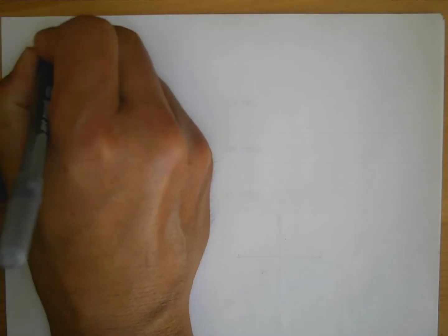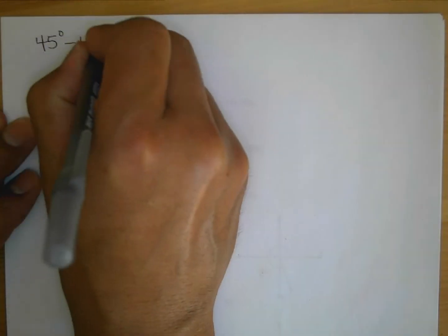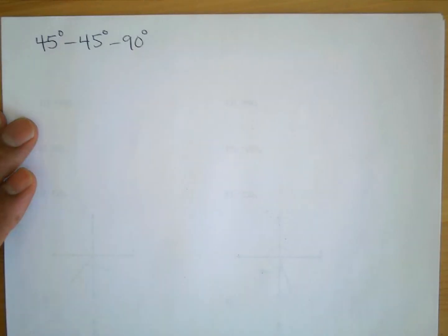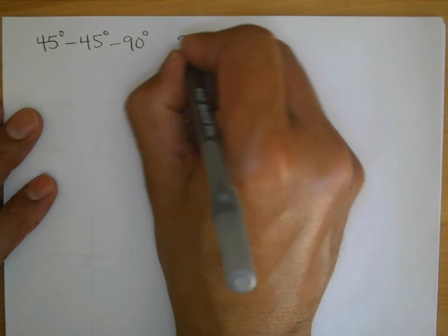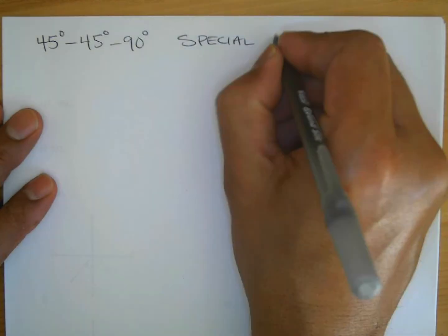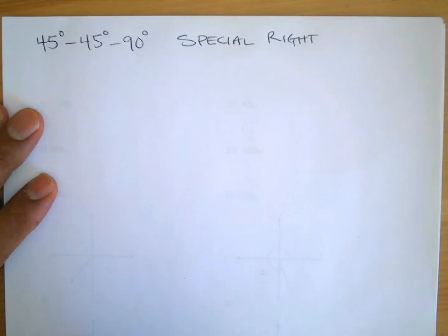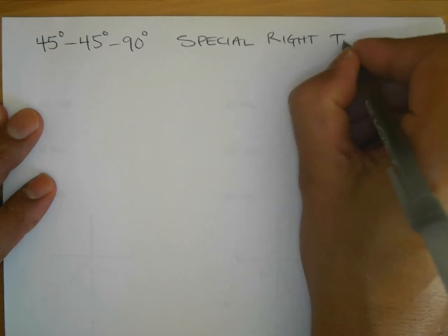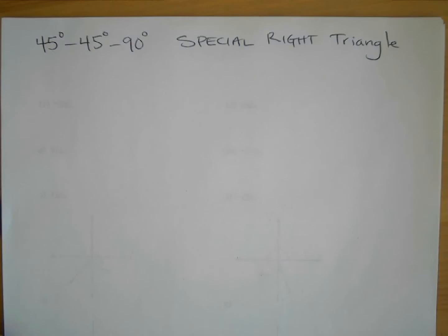We're going to start the notes for the trigonometry piece here. This is the last — and it's a really big unit — the last unit we're going to see this semester. We're going to start off with looking at the 45-45-90 degree special right triangle. Copy these into your notebooks, log in the page number, and write it on your table of contents.